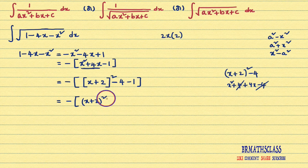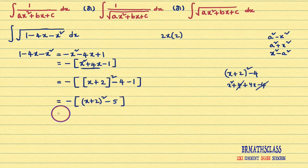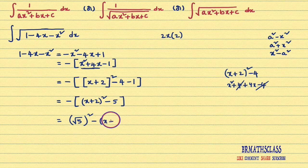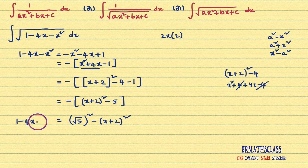Minus 4 minus 1 is minus 5. So to avoid the confusion, I will multiply the expression inside with minus. When I multiply this expression with minus, the minus of minus becomes plus, and 5 can be written as (√5)². So finally, what we came to know is that 1 − 4x − x² can be written as (√5)² − (x + 2)².